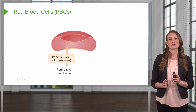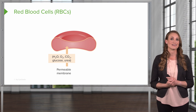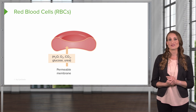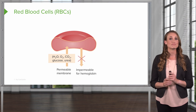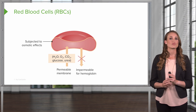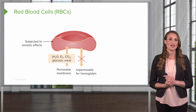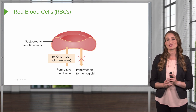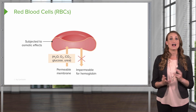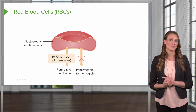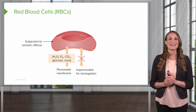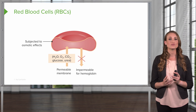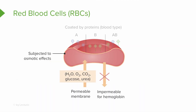The membrane is freely permeable to water, oxygen, carbon dioxide, glucose, urea, and certain other substances, but it is impermeable to hemoglobin. Red blood cells are subject to osmotic effects. When suspended in very dilute, or hypotonic, solutions of sodium chloride, they take in water and swell, which can destroy the cell. In a concentrated salt solution, the red cells will lose their water and will shrink. The membrane of a red blood cell has a group of molecules that confer blood group specificity — type A, B, AB, or O.